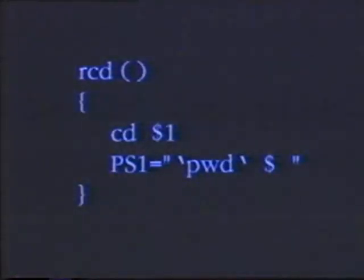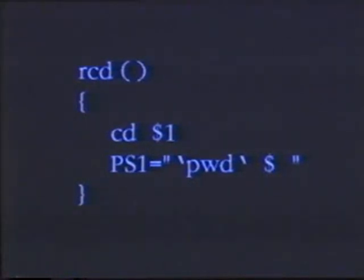Let me create a function called rcd, which stands for raise cd command. I would do that by typing rcd, parentheses, and then an opening brace. First, I want to change to whatever argument I've put on the rcd command line, so I type: cd $1.